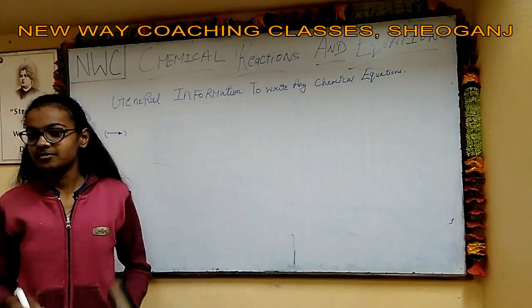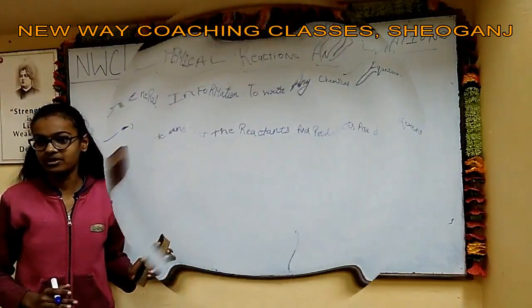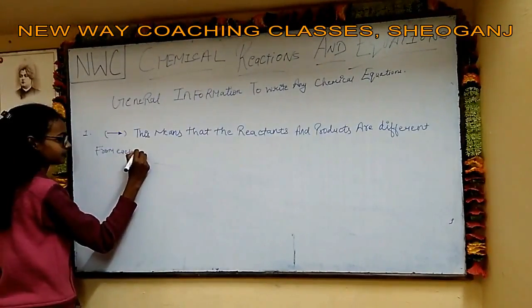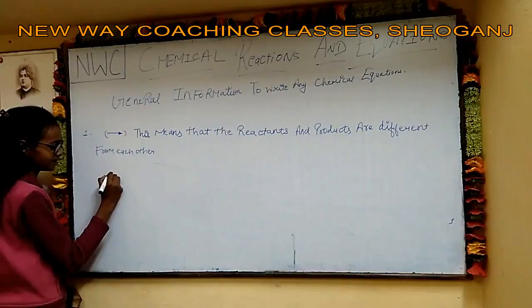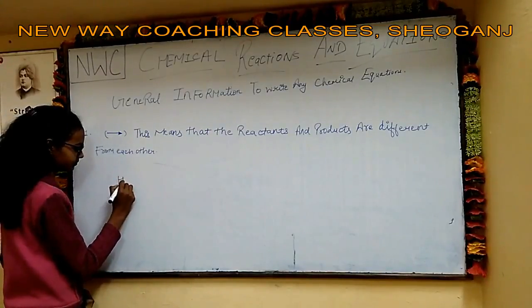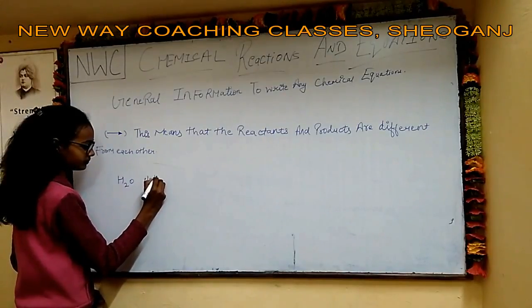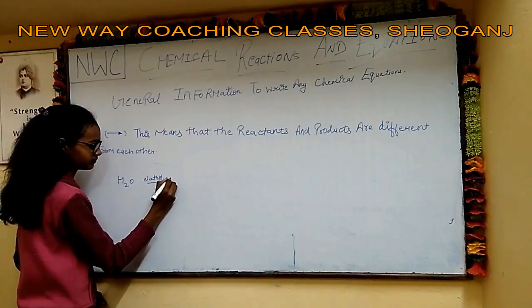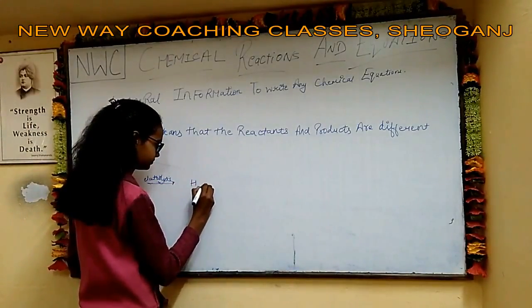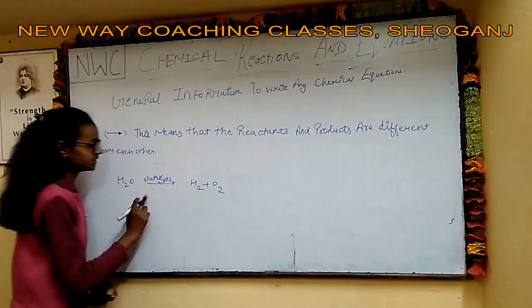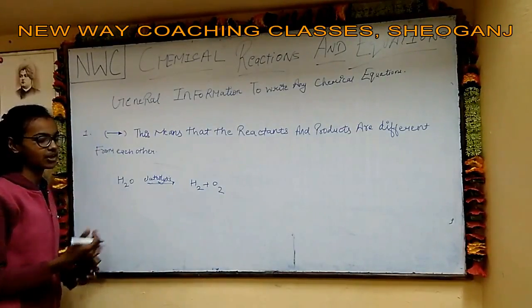Do you know what is the meaning of this arrow? This arrow means that reactants and products are different from each other. From this we understand that the reactants are different and the products are different.